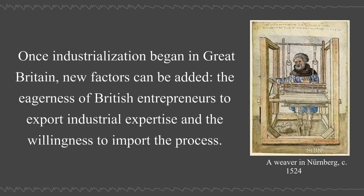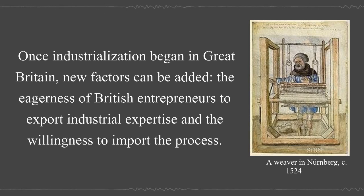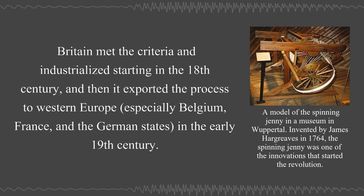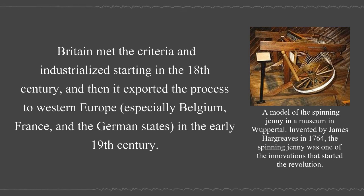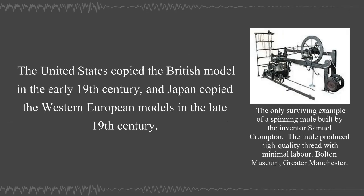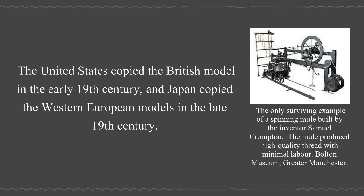Once industrialization began in Great Britain, new factors can be added: the eagerness of British entrepreneurs to export industrial expertise and the willingness to import the process. Britain met the criteria and industrialized starting in the 18th century, then exported the process to Western Europe, especially Belgium, France, and the German states in the early 19th century. The United States copied the British model in the early 19th century and Japan copied the Western European models in the late 19th century.